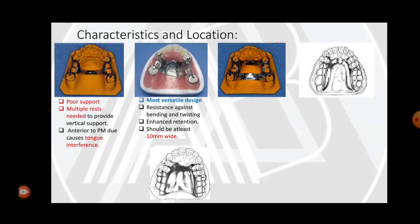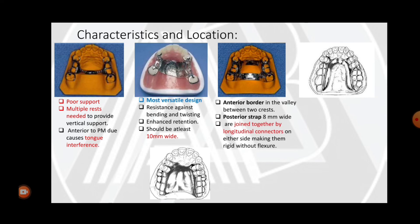The palatal strap is one of the most versatile designs. It provides resistance against bending and twisting because it is wider and strap-shaped. As it covers more area than a bar, it provides enhanced retention and should be at least 10 millimeters wide to gain adequate retention and stability.